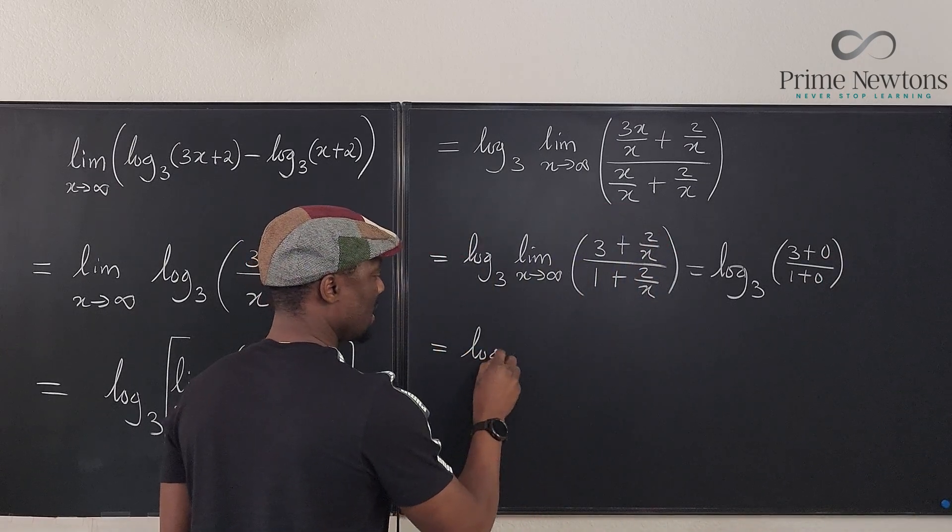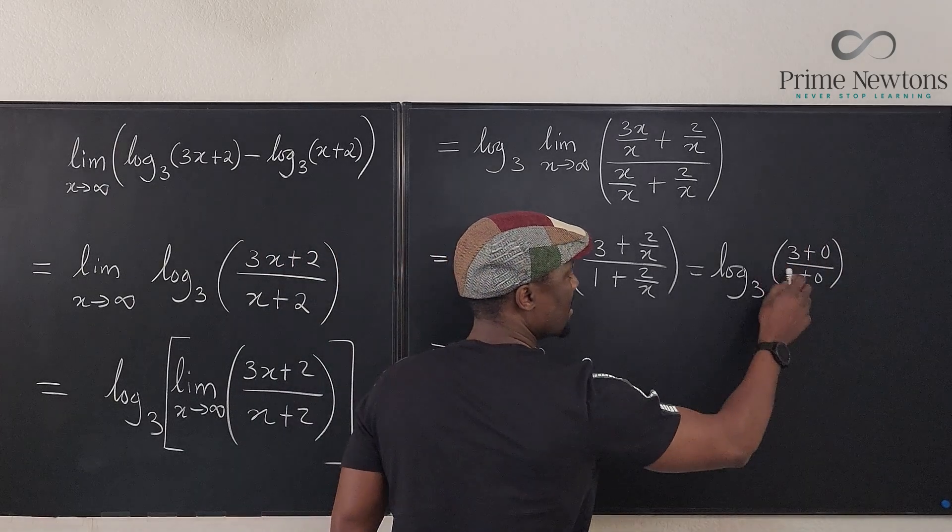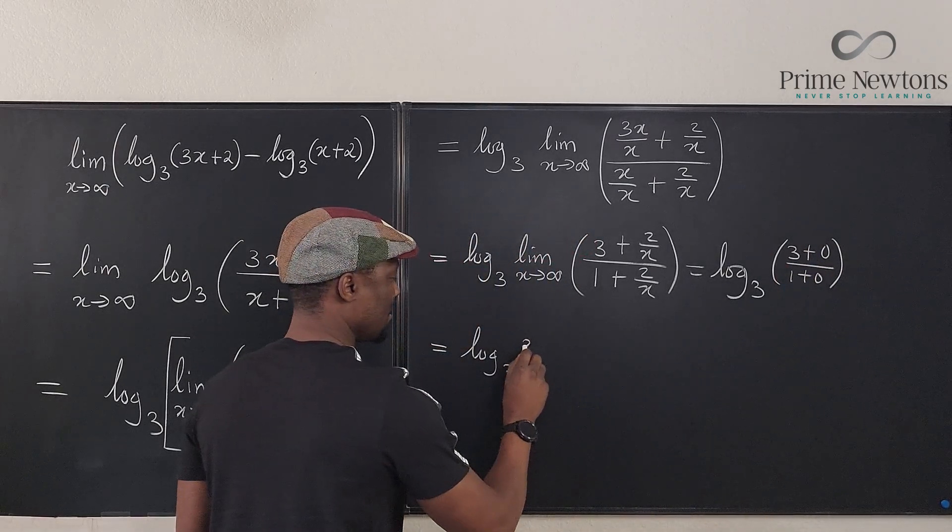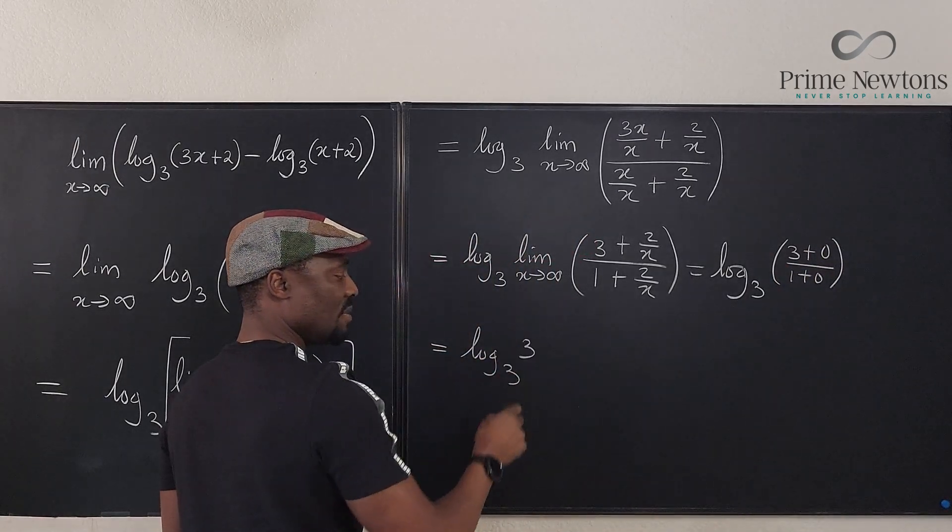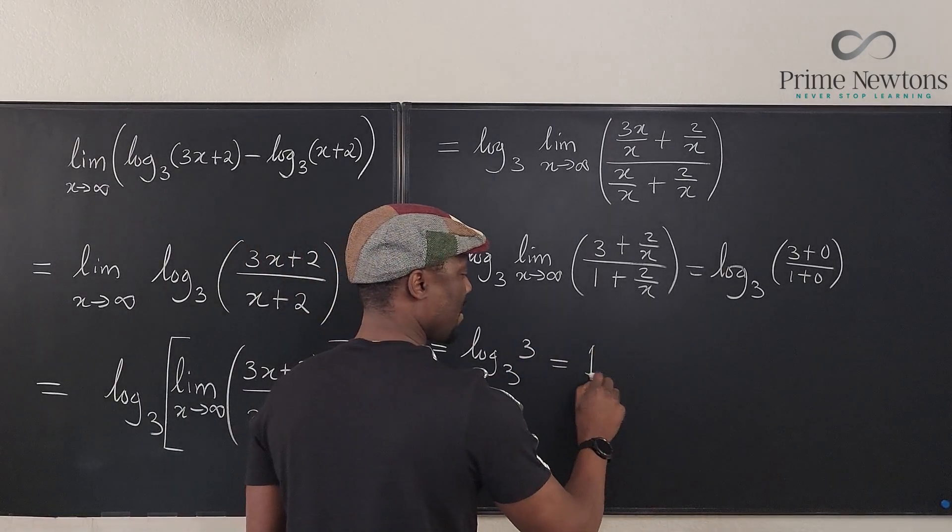So this is equal to log three. The answer here is three over one, which is three. And log three base three is one.